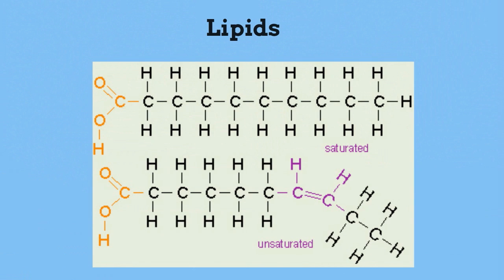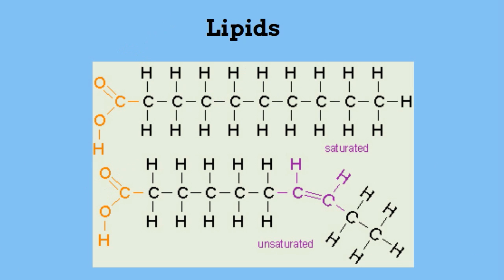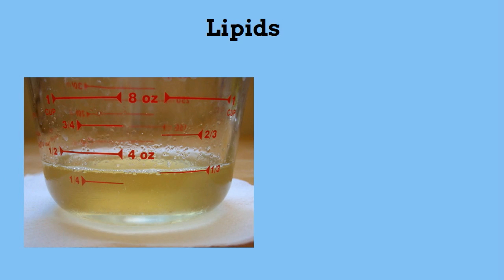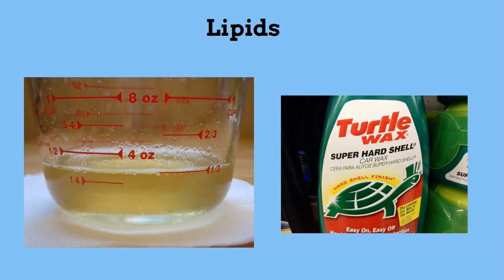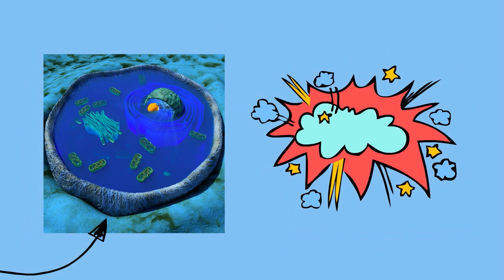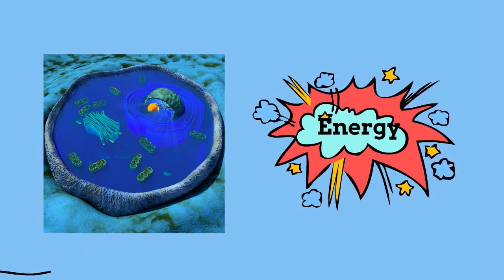Lipids are molecules composed of carbon, hydrogen, and oxygen. Some of them also contain nitrogen and phosphorus. Examples of lipids are fats, steroids, waxes, and phospholipids. Lipids help make cell membranes and store energy.